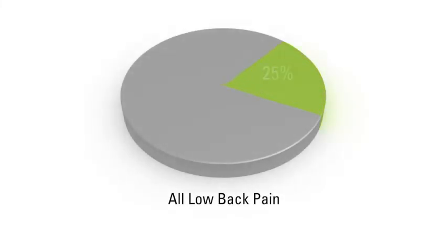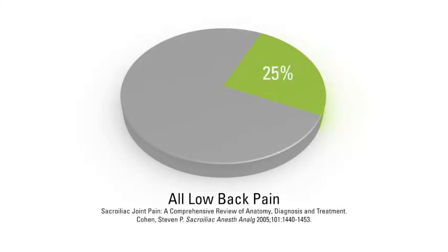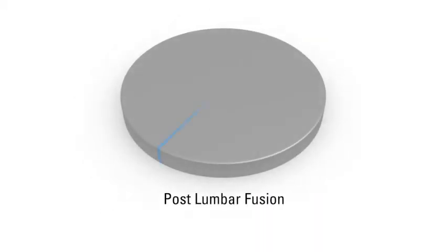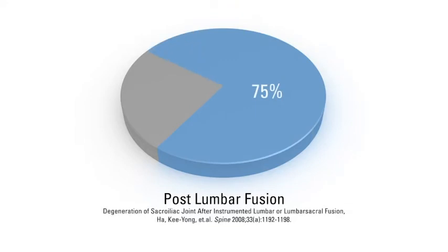Many surgeons have ignored the SI joint as a contributor to pain in the low back even though 20-25% of patients with low back complaints have their origin in the SI joint. Additional studies have shown the incidence of SI joint degeneration after lumbar fusion surgery is 75% at 5 years post-surgery.